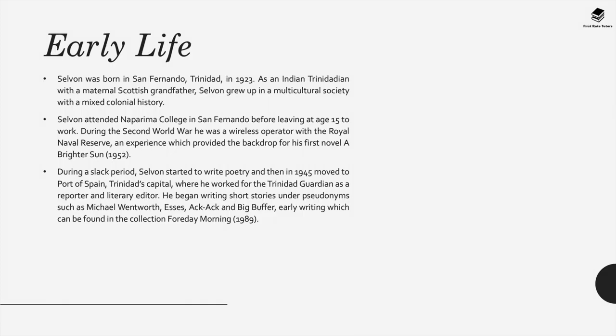He was born in San Fernando in Trinidad in 1923 and was an Indian Trinidadian with a maternal Scottish grandfather; however, he grew up in a multicultural society with a mixed colonial history. He attended Naparema College in San Fernando before leaving Trinidad at age 15 for work. During the Second World War he was a wireless operator with the Royal Naval Reserve, an experience which provided the backdrop for his first novel, A Brighter Sun.